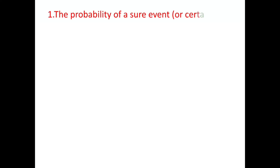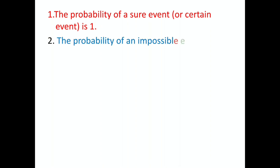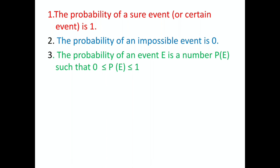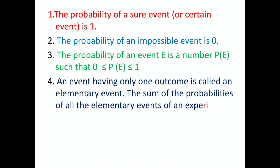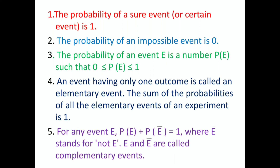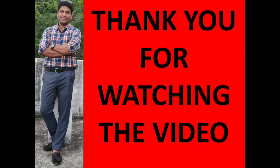Let us recollect the key points from this video. The probability of a sure or certain event is 1. The probability of an impossible event is 0. The probability of an event E is a number P(E) such that 0 ≤ P(E) ≤ 1. An event having only one outcome is called an elementary event. The sum of all probabilities of elementary events of an experiment is 1. For any event E, P(E) + P(Ē) = 1, where Ē stands for not E — E and Ē are called complementary events. Thank you for watching. In the next video we shall discuss more topics in probability with examples and exercise problems.